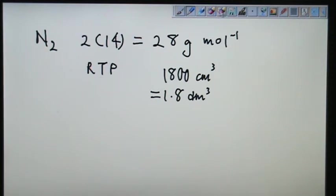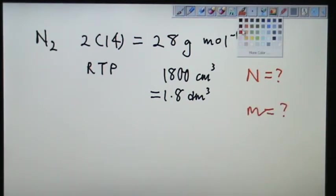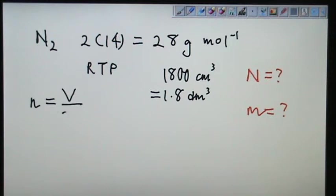So they are actually asking for 2 pieces of information. Number of molecules. And another thing, they are asking for the mass of the sample. So, can we find the number of mole first? Because at RTP we know that number of mole is V over 24.